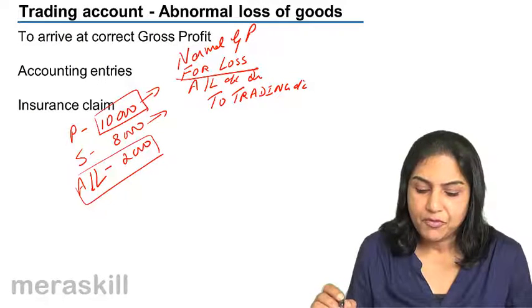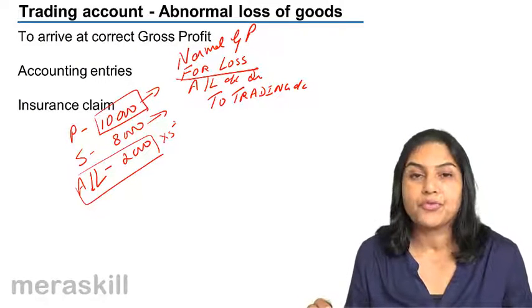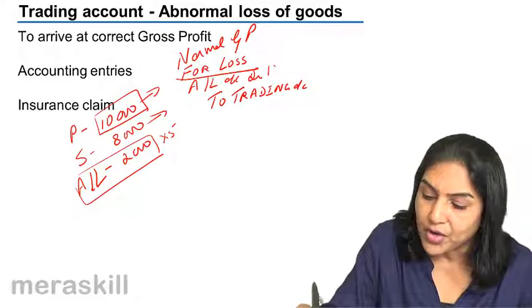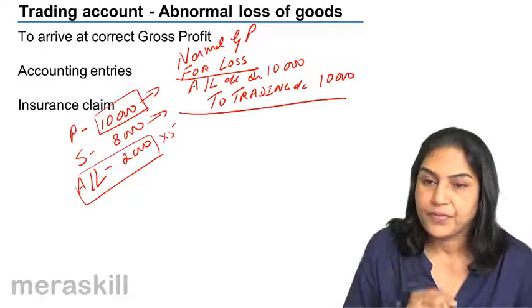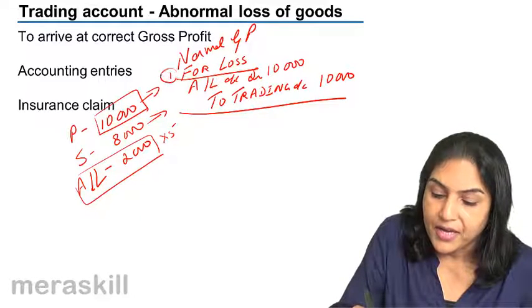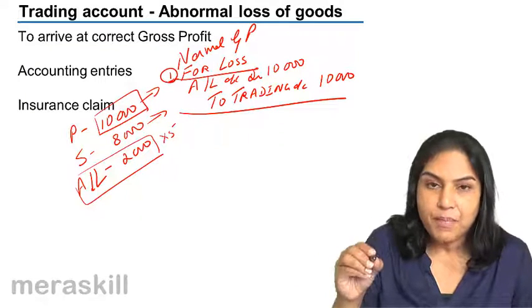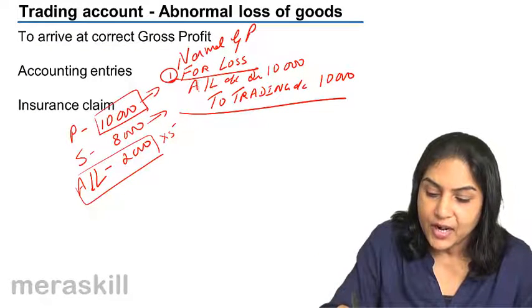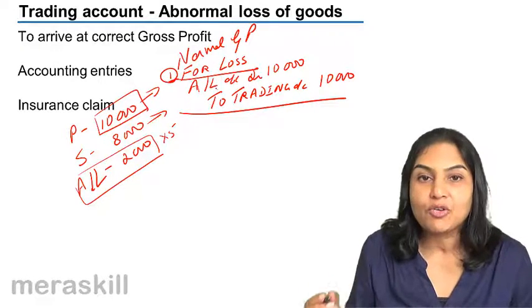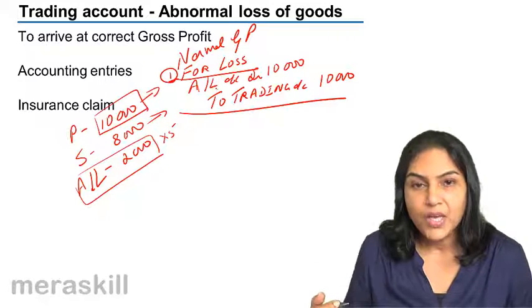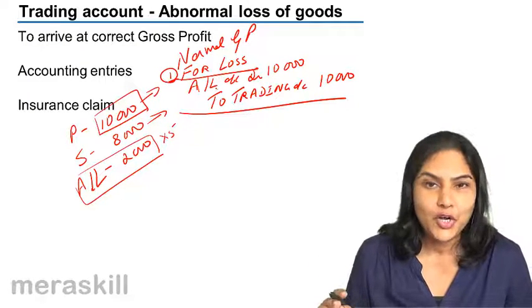Let us take an example for simplicity's sake. Let us say the cost of these goods was at the rate of rupees 5. I am talking of an abnormal loss of rupees 10,000. We pass this entry for the loss. As a result of passing this entry, we have created an account called abnormal loss. Now, what do we do? We close this abnormal loss by transferring it to the profit and loss account.